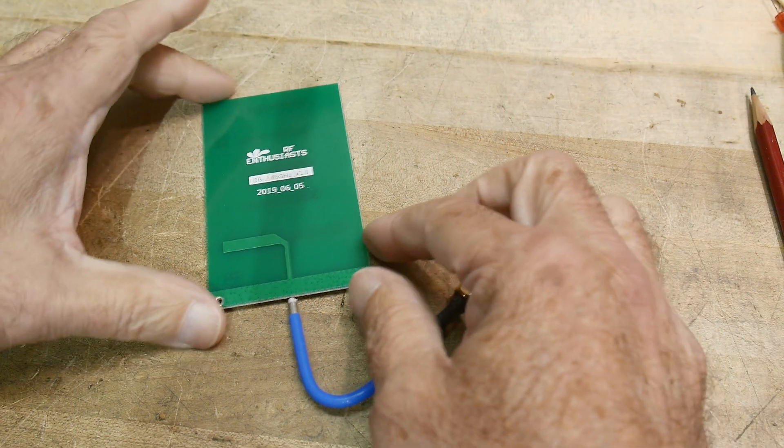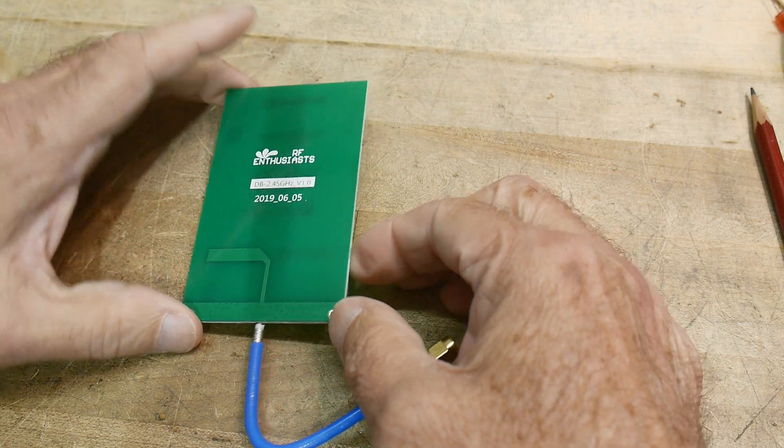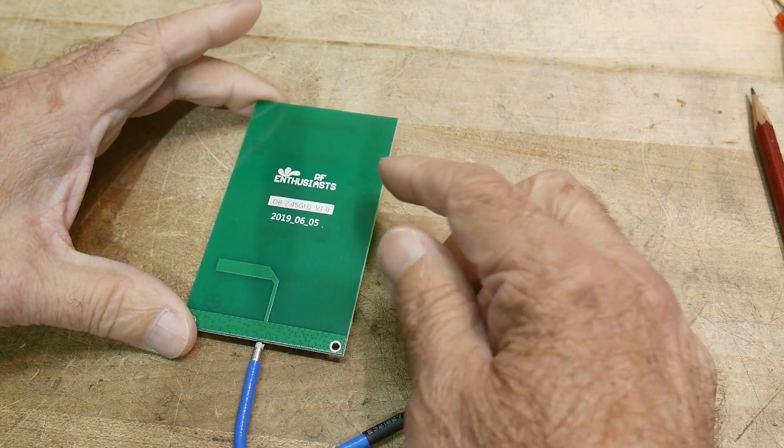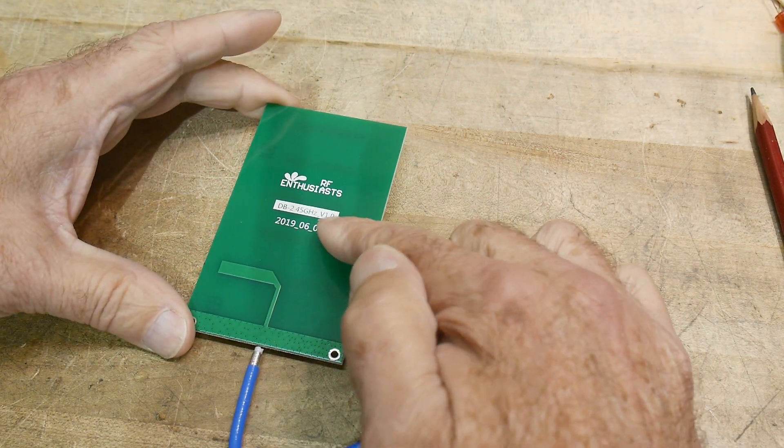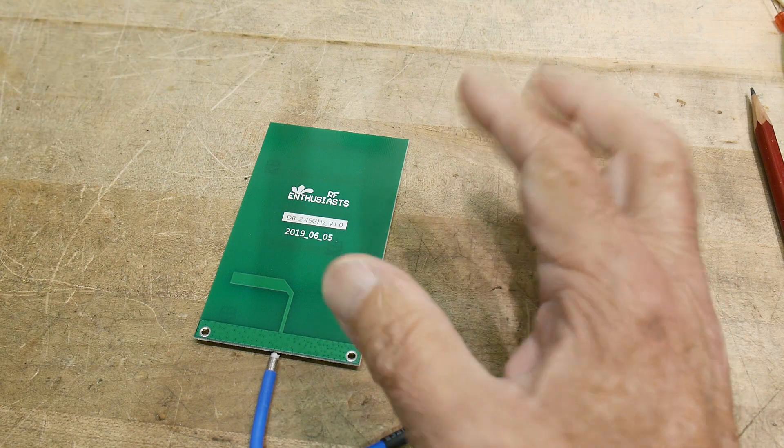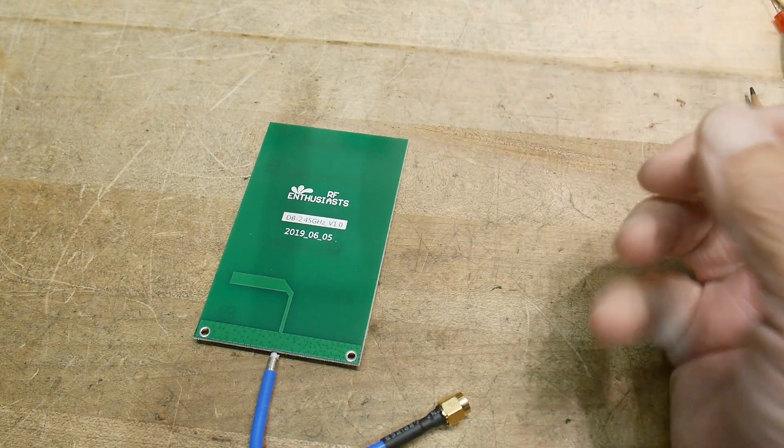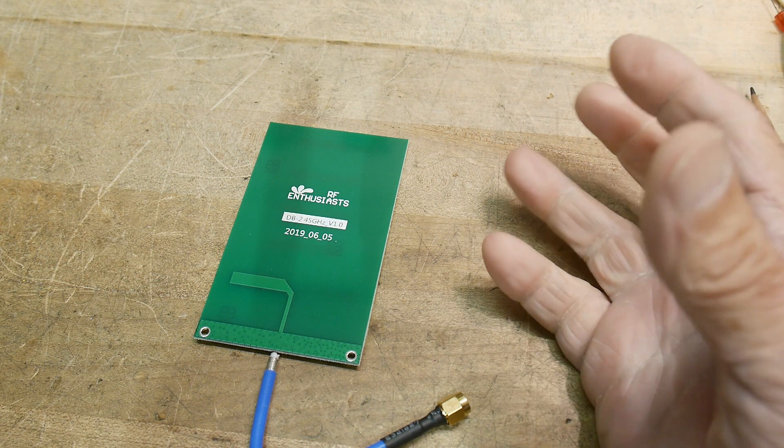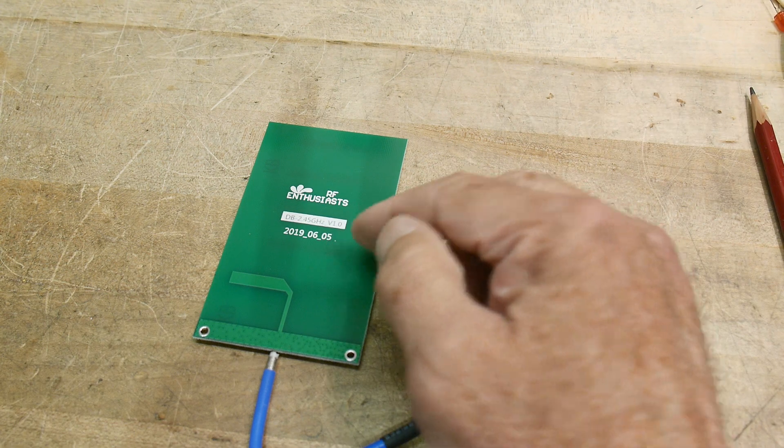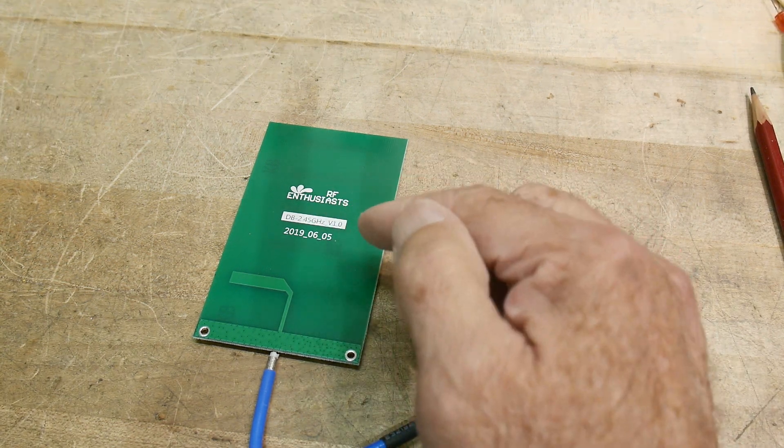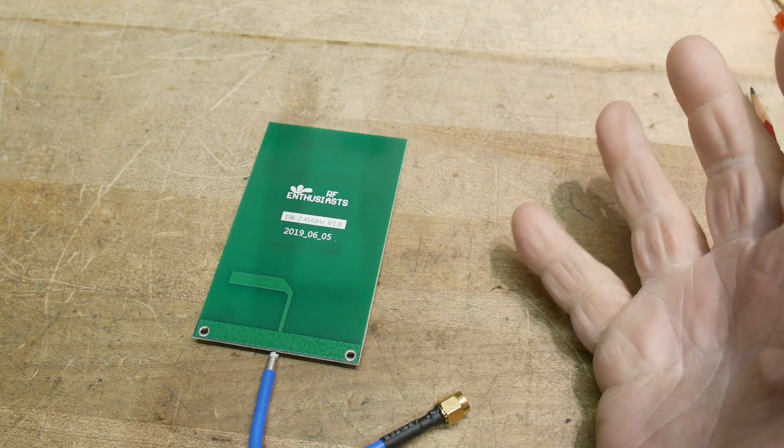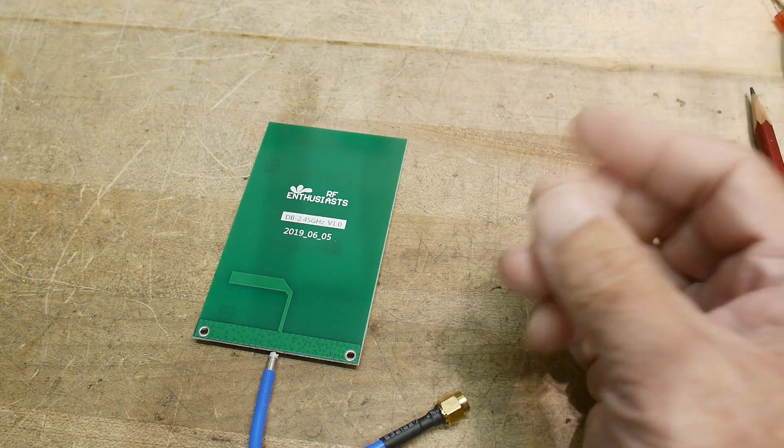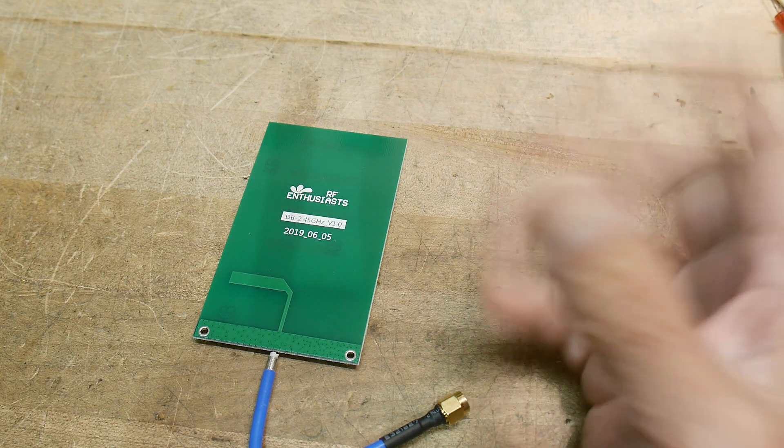Another antenna - I don't know if I got this off eBay or AliExpress. This one's by RF Enthusiasts. My experience with buying Chinese things is that a lot of times these aren't from RF Enthusiasts, they're just a PC board that somebody developed and somebody in China just decided to clone it.